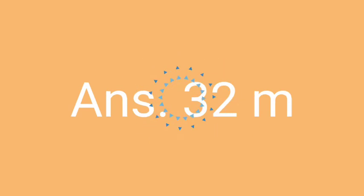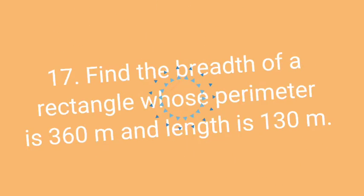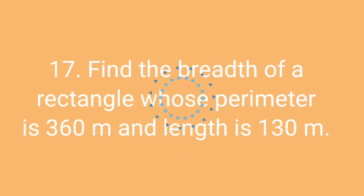The correct answer of this question will be 32 meter. The length of a rectangle whose area is 640 square meter and breadth is 20 meter is 32 meter.